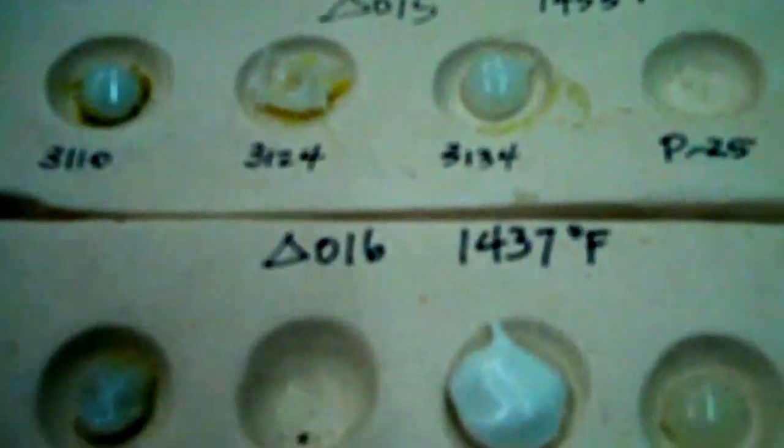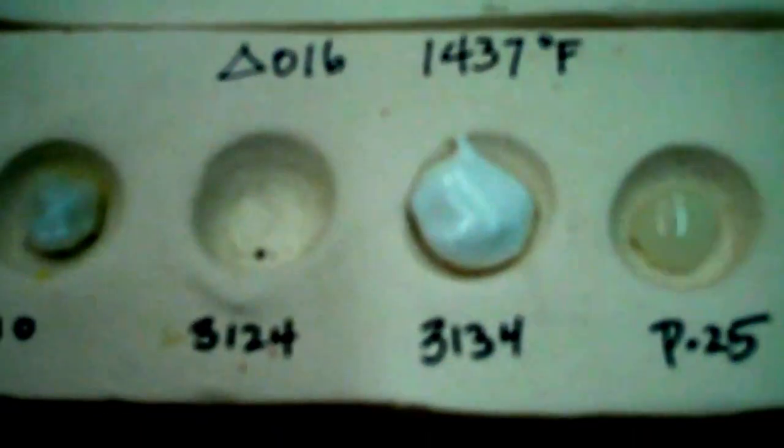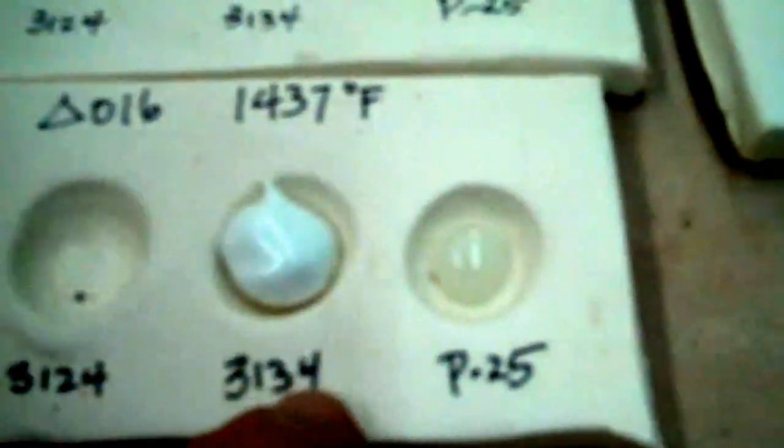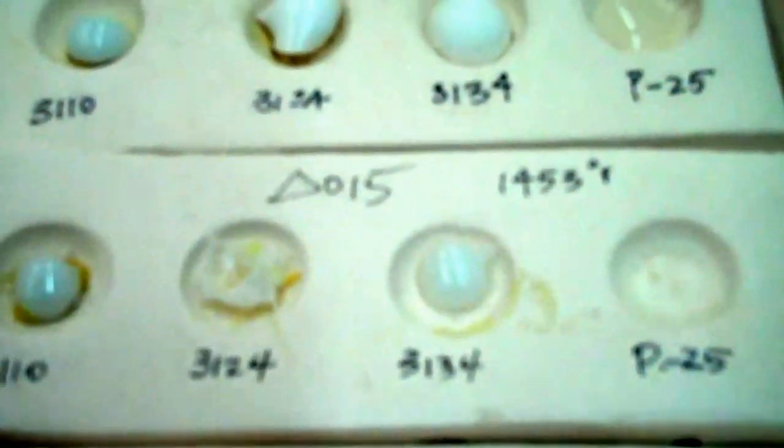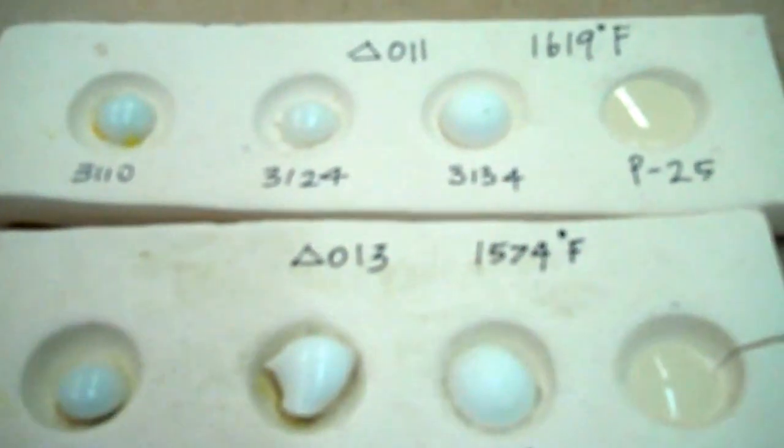Or, for instance, on this test, I melted frit 3110, 3124, 3134, P25. And then I melted them at all different temperatures. So that helped me understand something about the melting point of feldspar.